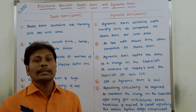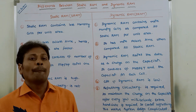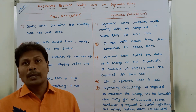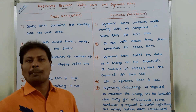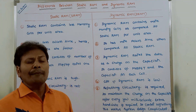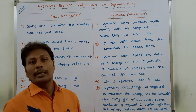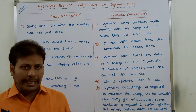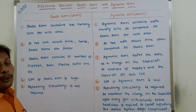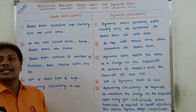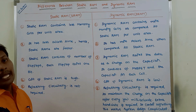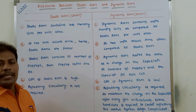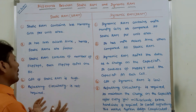The fifth difference: a refreshing circuit is not required in static RAMs. Whereas in the case of dynamic RAMs, refreshing circuitry is required to store data as a charge on the capacitor. Hence, some hardware circuit is required to control refreshing, which makes the system more complicated. In static RAMs, we do not require any refreshing circuitry for storing data.